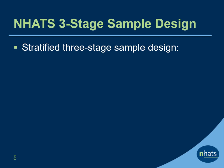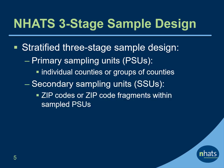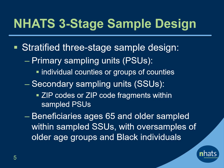NHATS uses a stratified, three-stage sample design. The primary sampling units, or PSUs, are individual counties or groups of counties. PSUs were sampled from strata that were created based on region of the country and variables reflecting demographic composition. Within sampled PSUs, the secondary sampling units, or SSUs — zip codes or clusters of zip codes — were then sampled. Within sampled SSUs, Medicare beneficiaries who are ages 65 and older were sampled, with oversamples of older age groups and black individuals.